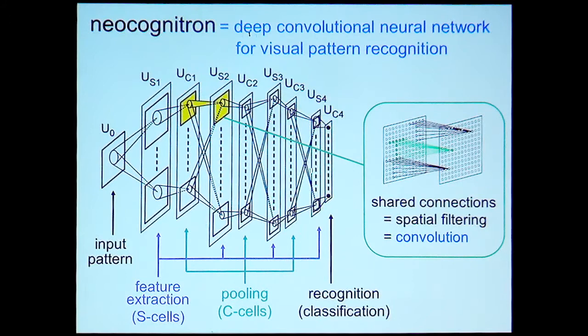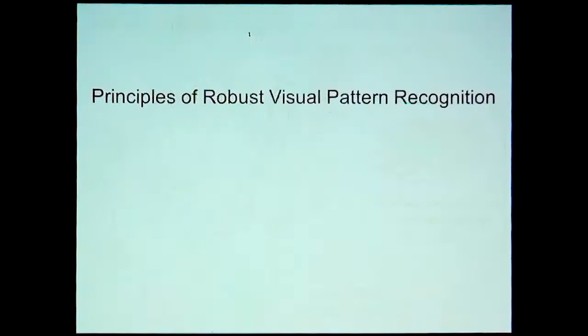At the deepest layer, the recognition result is shown. Each layer is divided into sub-layers. In each sub-layer, cells are located keeping the retinotopy to the preceding layer. The connection between two sub-layers has shared connections, which makes the spatial filtering and convolution layers.